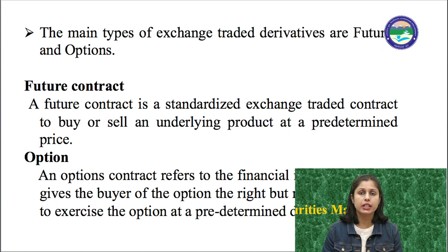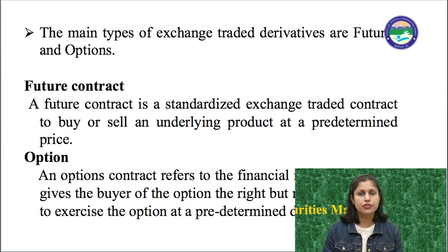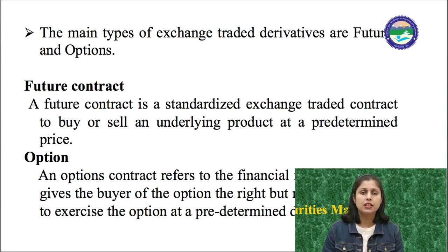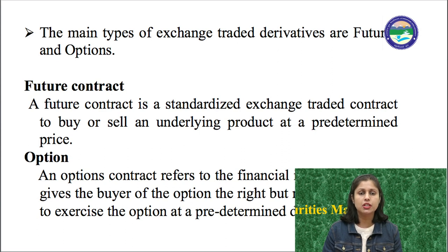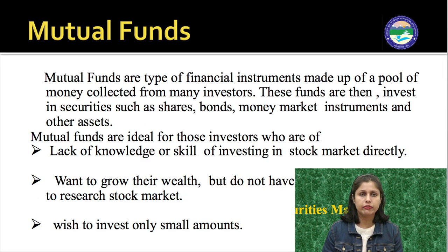Derivatives are used for hedging and risk management. The main types of derivatives are futures and options. A futures contract is a standardized exchange-traded contract to buy or sell an underlying product at a predetermined price. An option refers to a financial instrument which gives the buyer the right but not the obligation to exercise the option at a predetermined date and price. This is about the derivative market.